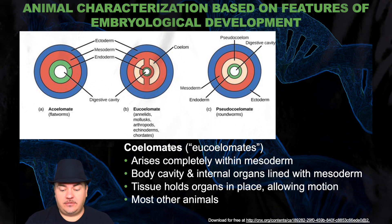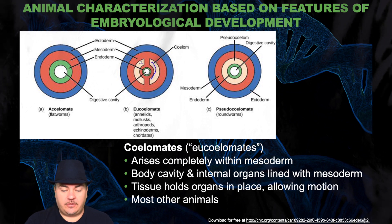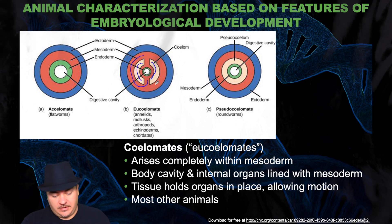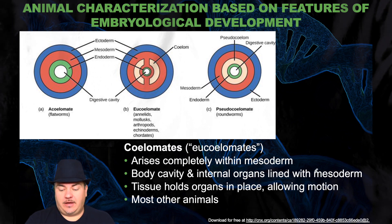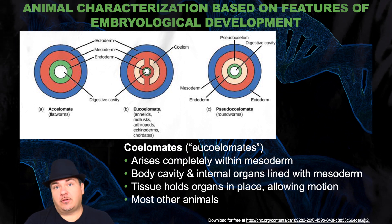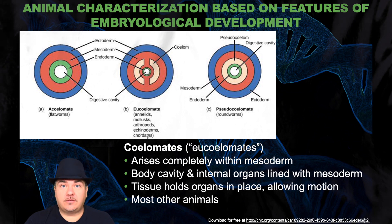Then you have the coelomates, where the coelom arises completely within the mesoderm. So you have this fluid or gas filled compartment entirely within the mesoderm layer — you can see the beige shaded area is completely within the orange shaded area. Body cavity and internal organs are lined with mesoderm. Tissue holds organs in place, allowing motion. This is most other animals — annelids, mollusks, arthropods, echinoderms, chordates — you, for example, are a coelomate.